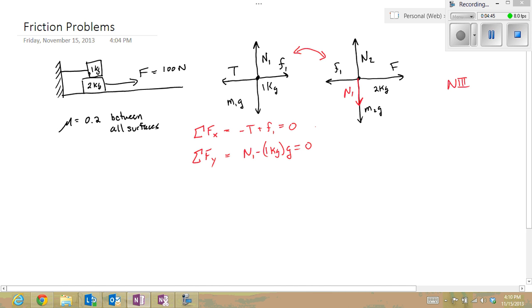Why zero? Normally it's equal to ma. In the static situation where the object is not moving, the acceleration is zero. Therefore, the right-hand side of Newton's second law is going to be zero.